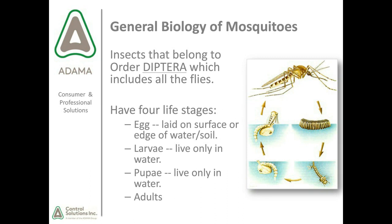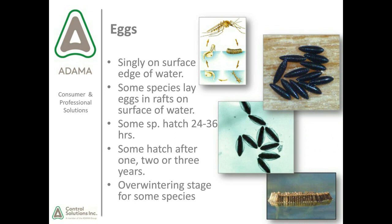Mosquitoes are insects belonging to the order Diptera, which includes all flies. They have four life stages: egg, larvae, pupae, and adult. Eggs are laid singly on the surface or edge of water or soil. Some species may lay eggs in rafts on the water's surface. Some species hatch in 24 to 36 hours, while others may hatch after one, two, or even three years depending on species. There is also an overwintering egg stage for some species.